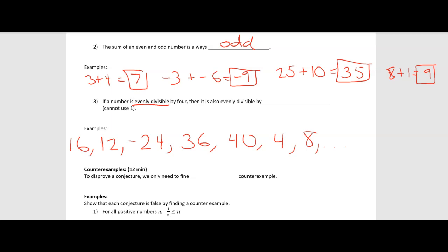What do we notice about all these numbers? Is there something else that they all have in common? Are they also divisible by some other number? Well, are they also divisible by eight? Well, some of them are like 16 and negative 24 and 40 and eight, but not all of them. But they are also evenly divisible by two. So that would be a conjecture based on the examples we have.